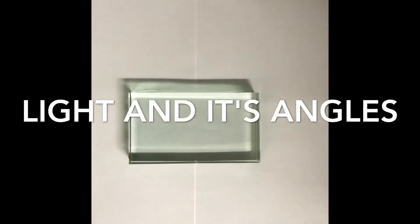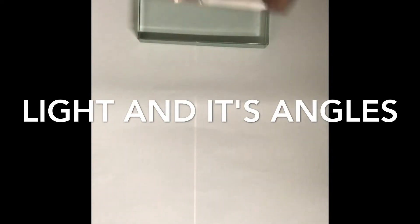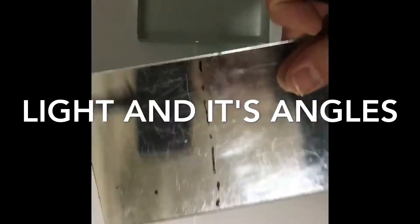Welcome to our session on light. This should support year eights mainly in their topic on light. I'm going to be talking about some of the rays that come through a glass block. First of all, before we even go to the glass block, we'll just talk about reflection. Here I've got a mirror.